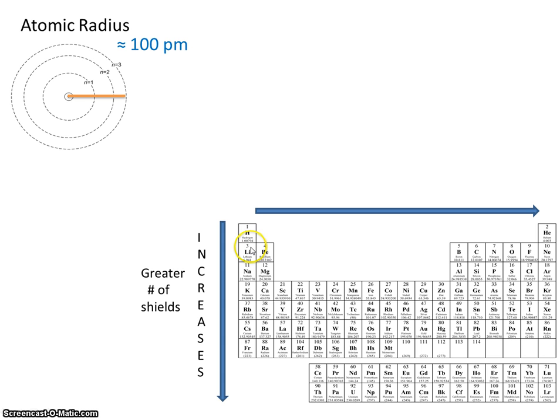For example, lithium, beryllium, boron, carbon, nitrogen, they all only have two energy levels. What is changing is the number of protons. We go from 3 to 4 to 5 to 6 to 7. So we're increasing the nuclear charge.